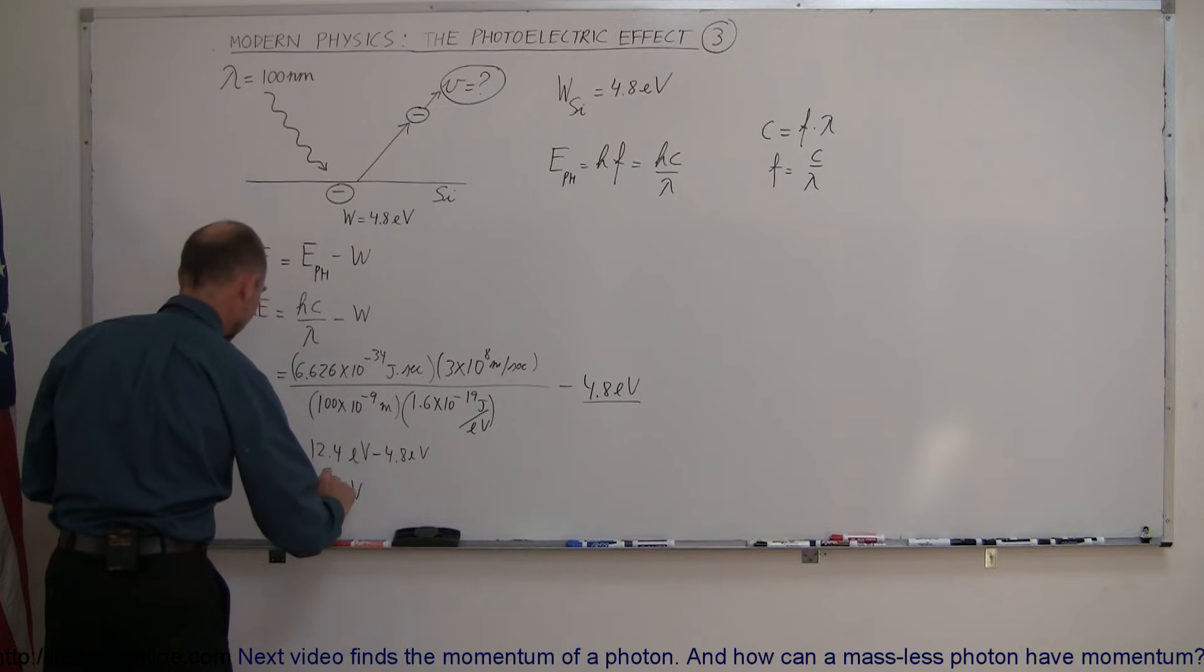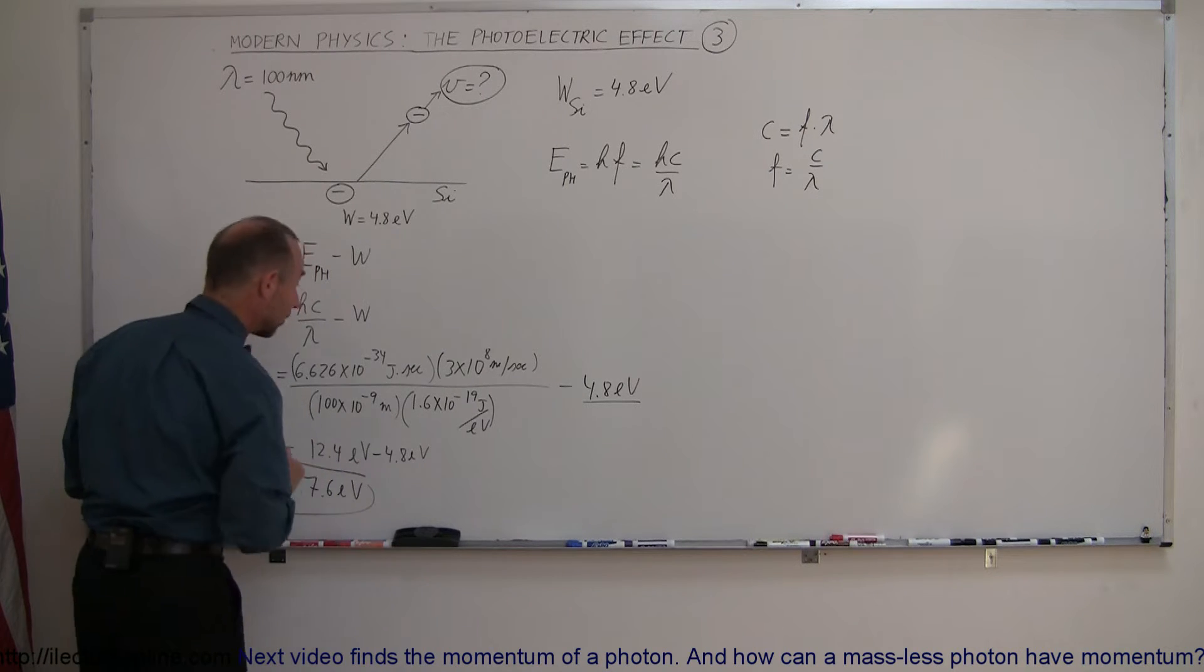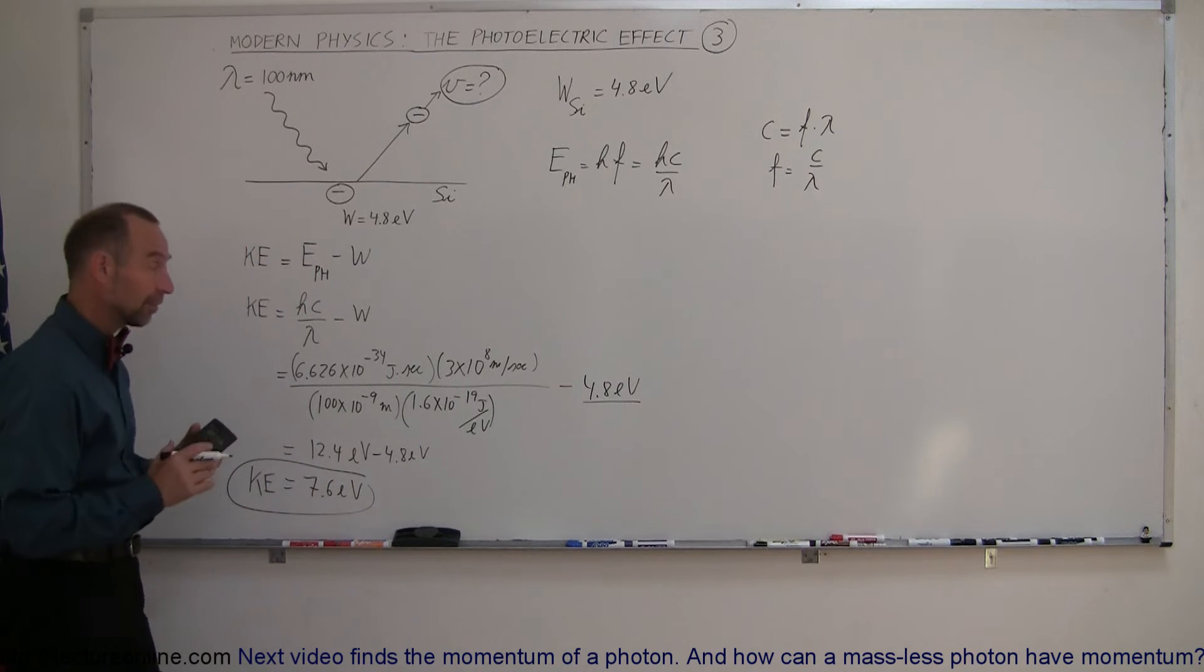That gives us enough kinetic energy for 7.6 electron volts. So that will now be the kinetic energy of the electron as it leaves the metal. How do we convert that to velocity?